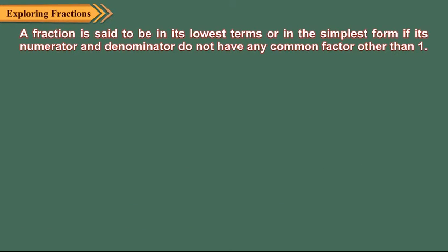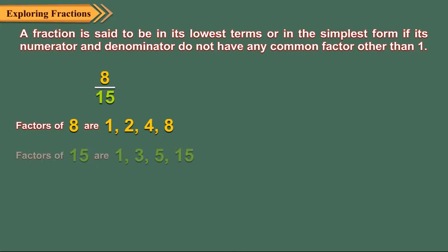A fraction is said to be in its lowest terms or in the simplest form if its numerator and denominator do not have any common factor other than one. Consider the fraction eight upon fifteen. All the factors of eight are one, two, four, eight. All the factors of fifteen are one, three, five, fifteen. Eight and fifteen have no common factor other than one. So, eight upon fifteen is in its simplest form.